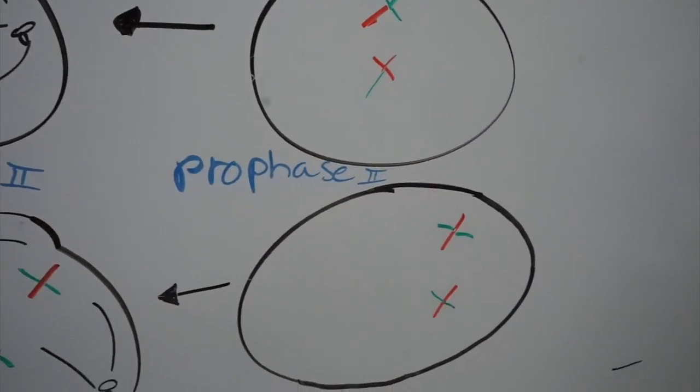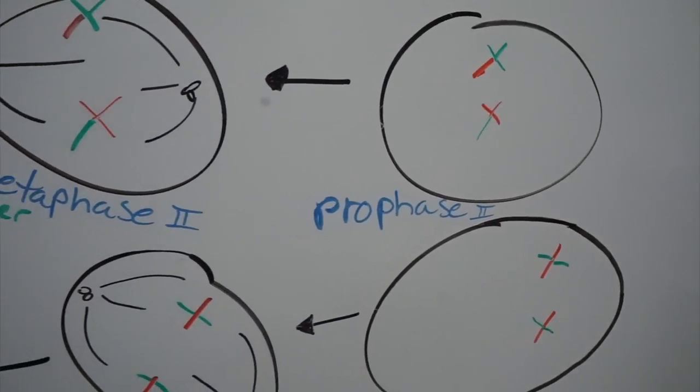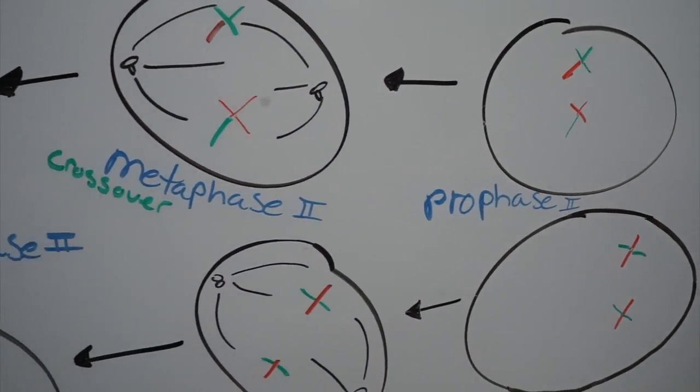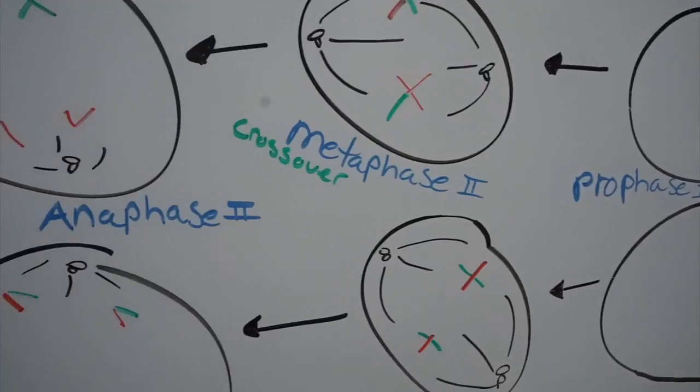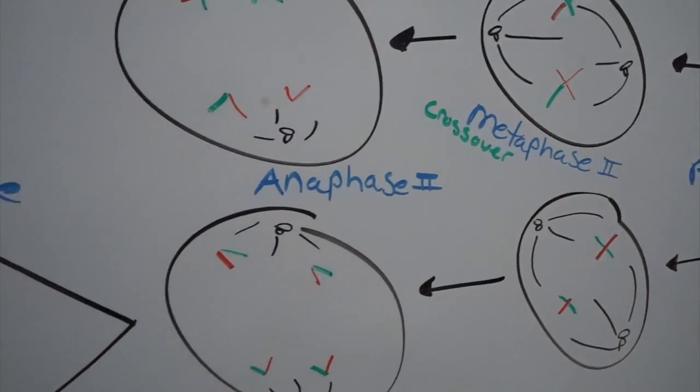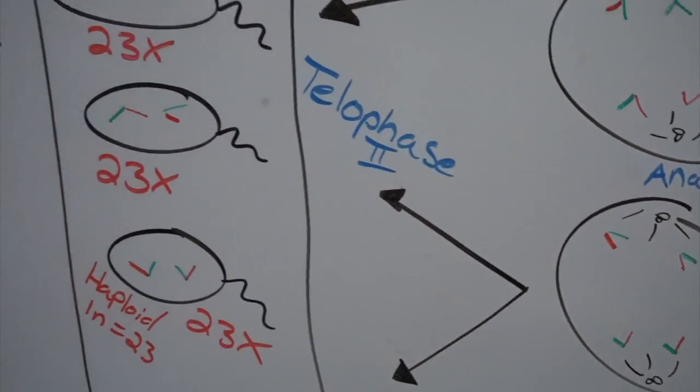We're moving right into prophase 2, nucleus is dissolving again, metaphase 2, and anaphase 2, and lastly, finally telophase 2, in which we're going to create 4 haploid cells.